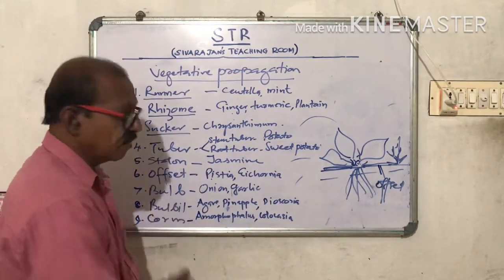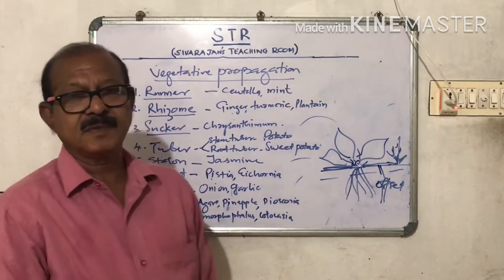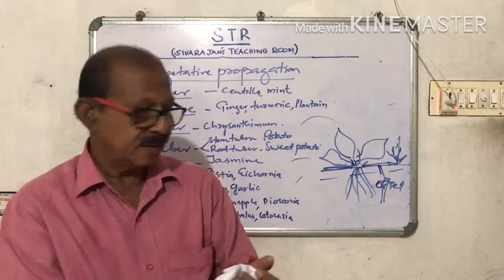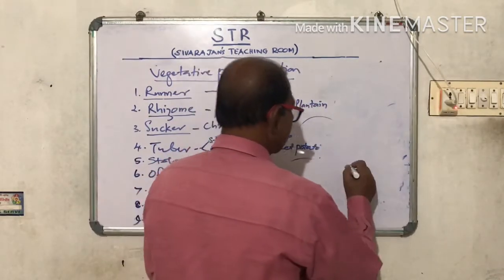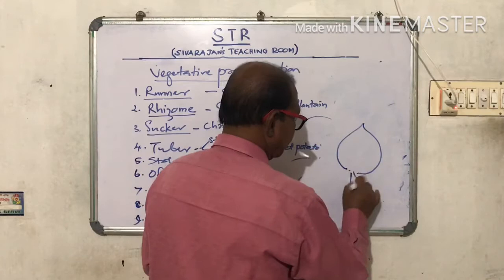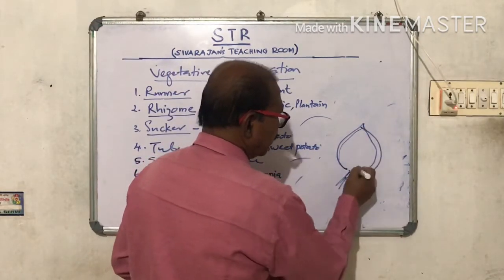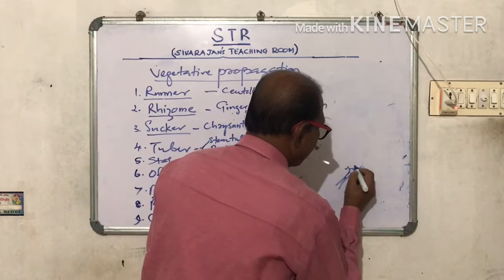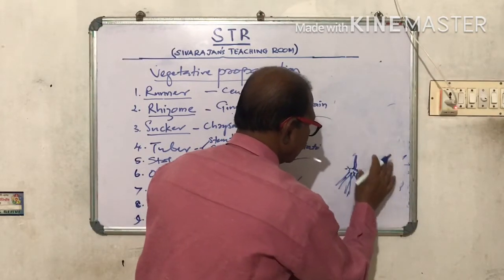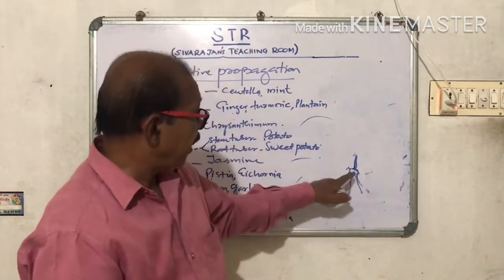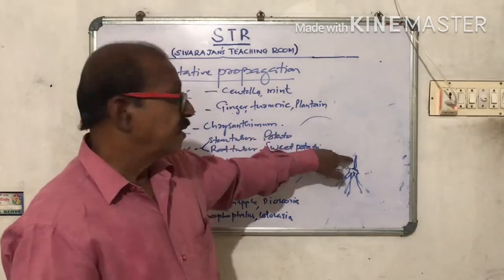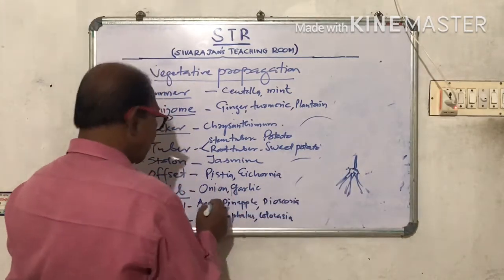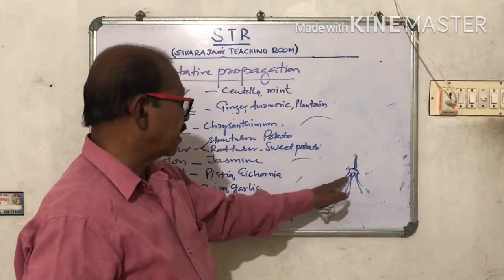Then Bulb. What is a Bulb? Example: Onion, Garlic, etc. You peel the onion — we can peel it off one by one, and finally a small core remains. This is the Bulb, and this part develops into the new plant. So Onion, Garlic, etc. are examples for Bulb.